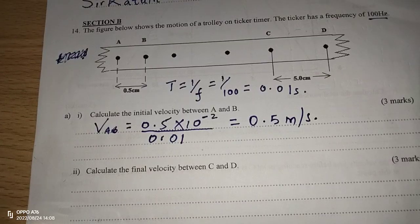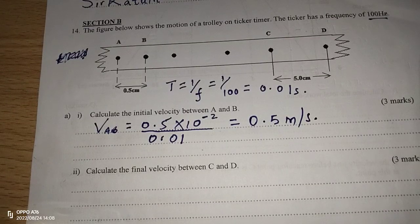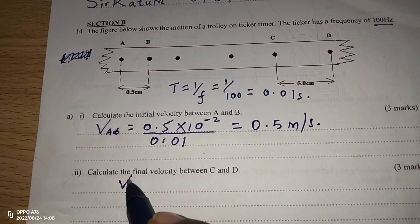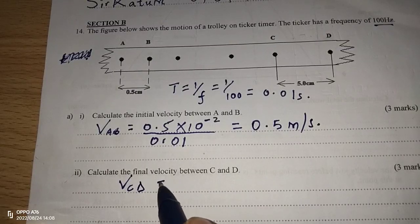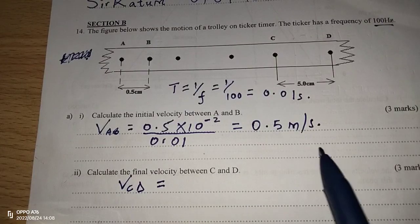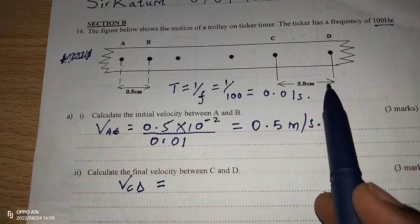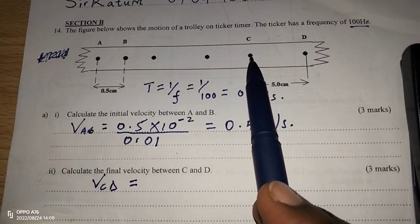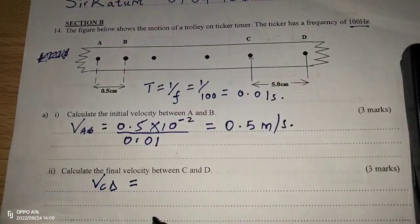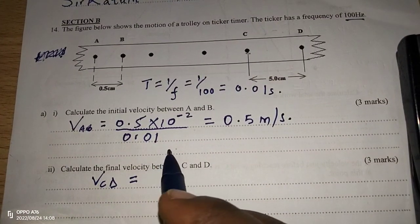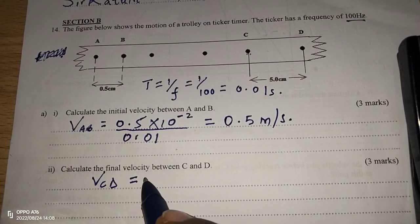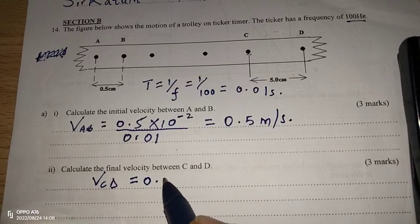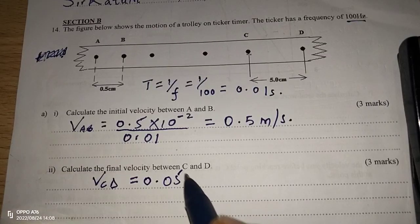On the other side, we're also supposed to get the final velocity between C and D. The final velocity between C and D is again going to be given by the distance within the third gap. From C to D, we have 5 cm. When divided by 100 to make it SI units, we get 0.05.